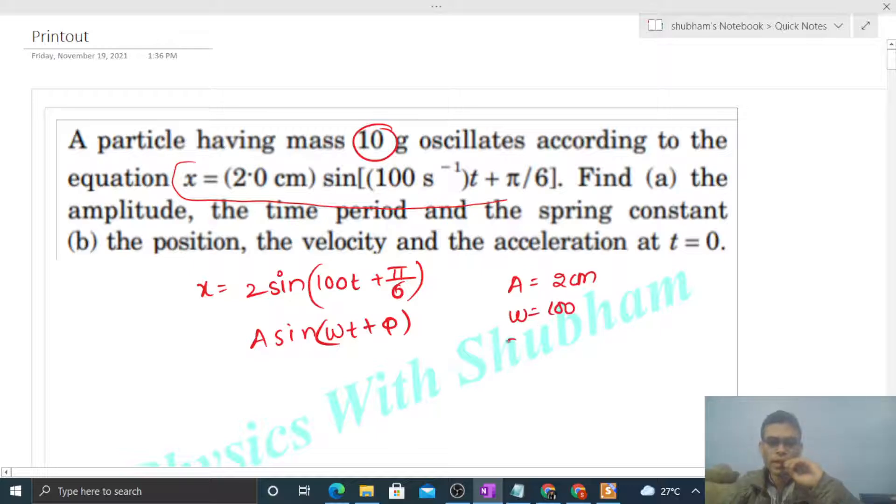If we compare here, then amplitude will be 2 centimeters, omega will be 100, and phi will be π/6. So amplitude is directly 2 cm. The time period will be 2π/ω, that is 2π divided by ω which is 100.